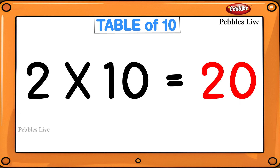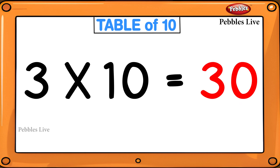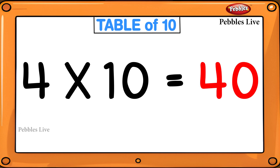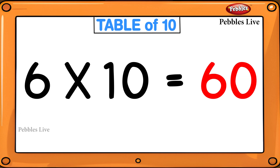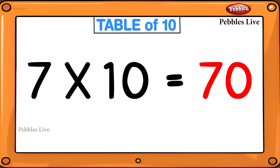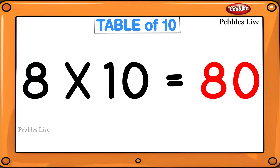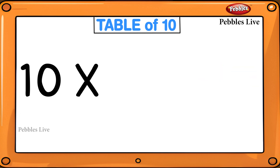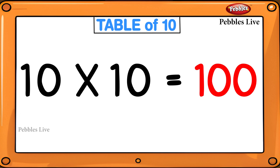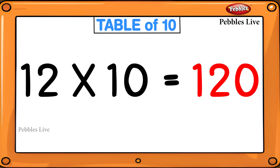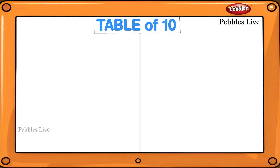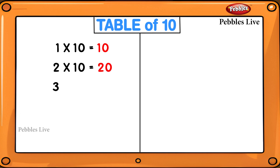1 tens are 10, 2 tens are 20, 3 tens are 30, 4 tens are 40, 5 tens are 50, 6 tens are 60, 7 tens are 70, 8 tens are 80, 9 tens are 90, 10 tens are 100, 11 tens are 110, 12 tens are 120.